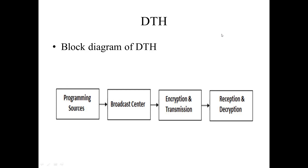Finally in 2000, DTH was allowed. The new policy required all operators to set up an uplink station in India within 12 months of getting a license. The working principle of DTH involves satellite communication, where the broadcaster modulates the received signals and transmits them to the satellite in the Ku-band.